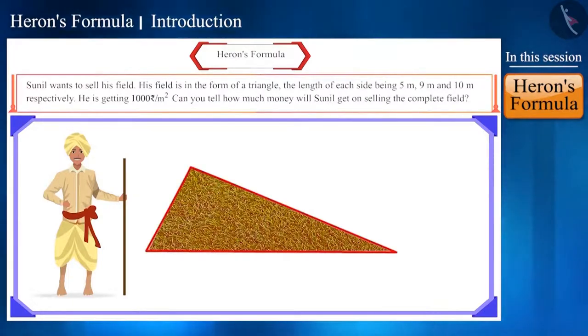Sunil wants to sell his field. His field is in the form of a triangle. The length of each side being 5 meter, 9 meter and 10 meters respectively. He is getting rupees 1000 per meter square. Can you tell how much money will Sunil get on selling this field? Let's try to help Sunil by finding the answer to the question.